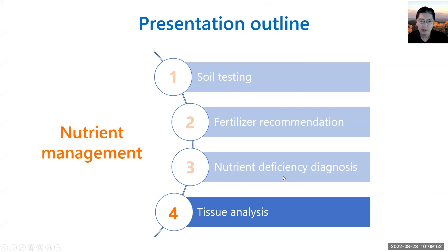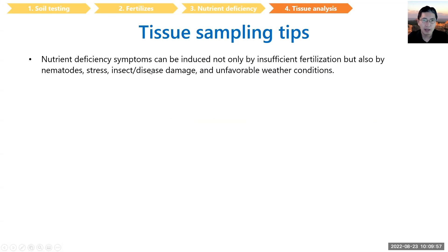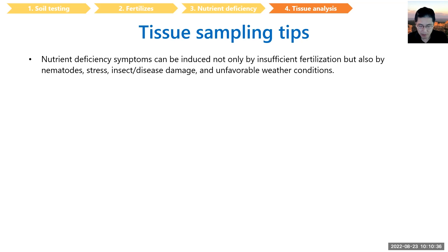The last item is tissue analysis. Nutrient deficiency symptoms can be caused not only by insufficient fertilization, but also by nematode stress, insect damage, disease, and unfavorable weather conditions. So yellow leaves, for example, may not mean nitrogen deficiency — or it could be deficiency caused by nematode root damage preventing nitrogen uptake rather than insufficient nitrogen application. Tissue testing can help determine what's happening, but it doesn't tell you everything.